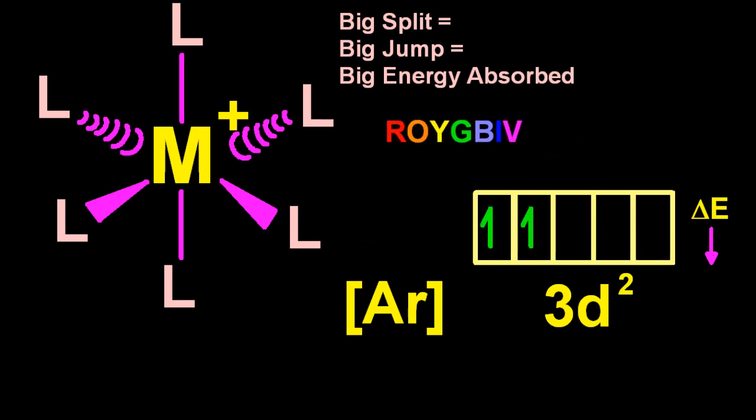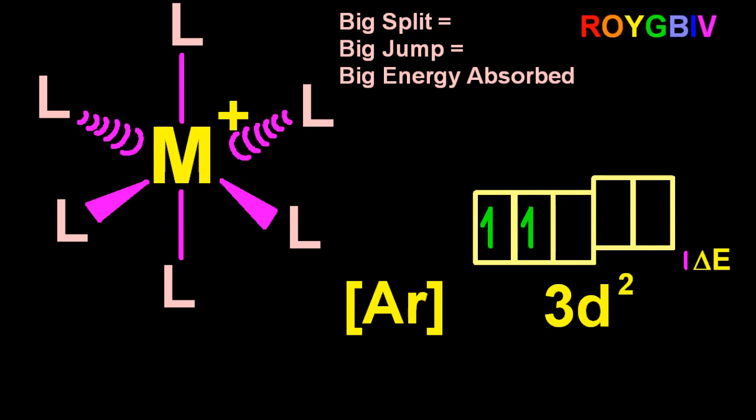So let's just reset this complex. If I have a small delta E, small split, small jump, small energy absorbed, so that's going to absorb red light to promote the electron. And as the split gets bigger, the light that's absorbed is going to have increasing energy, all the way through to violet.